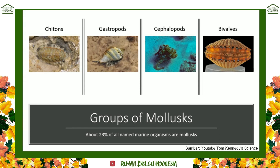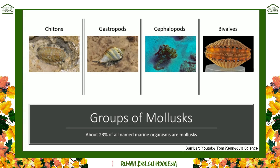So let's talk about these groups of mollusks. With 80,000 to 100,000 species, we're discovering new ones all the time. The four major groups are: the chitons, the gastropods, the cephalopods, and the bivalves. In fact, 23 percent of all named organisms are mollusks — so this is an incredibly diverse group of animals.